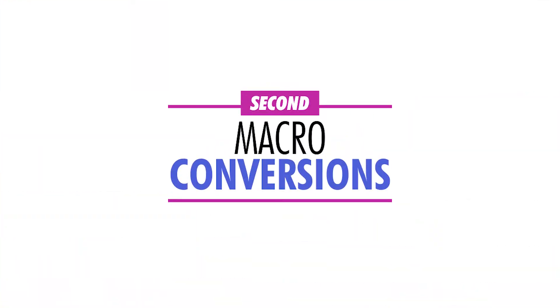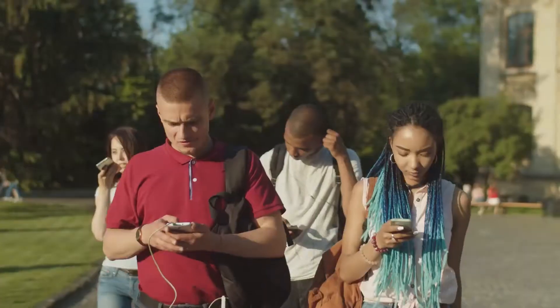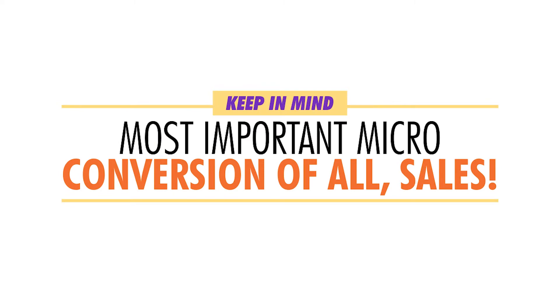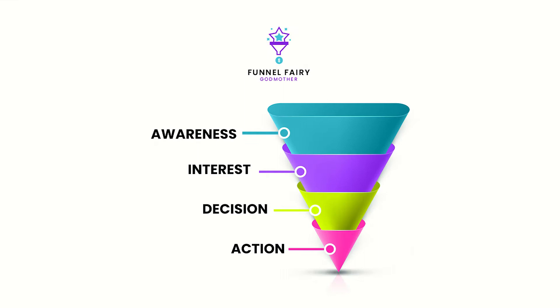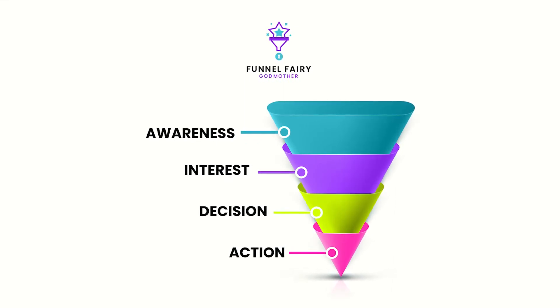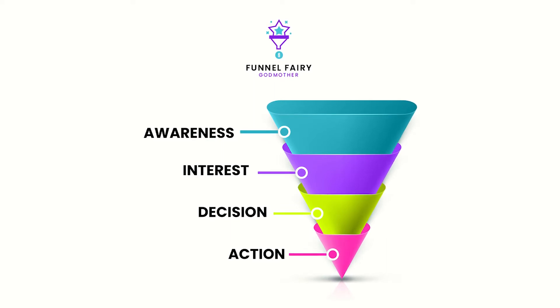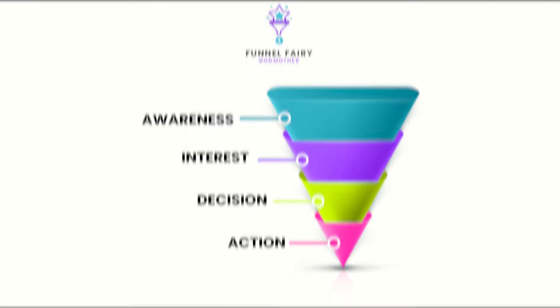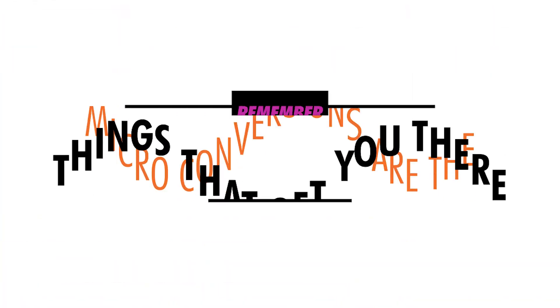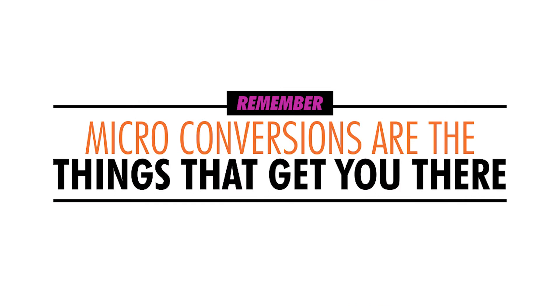And that leads us to the topic of macro-conversions. These are truly what you need for your business to succeed, and these types of conversions do include getting social followers or subscribers, email list opt-ins, and of course the most important macro-conversion of all — sales. But it's often hard to get people to drop all the way down to the bottom of that sales funnel from the first time they discover a piece of your content organically in search on platforms like Facebook and Instagram. While the macro-conversions are the most important, the micro-conversions are often the things that get you there.